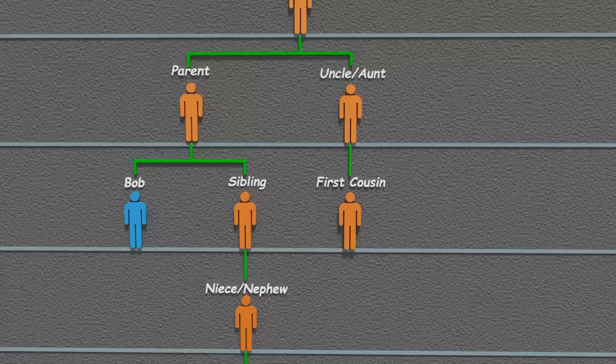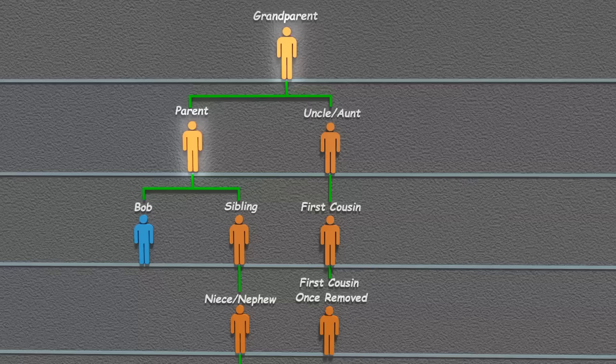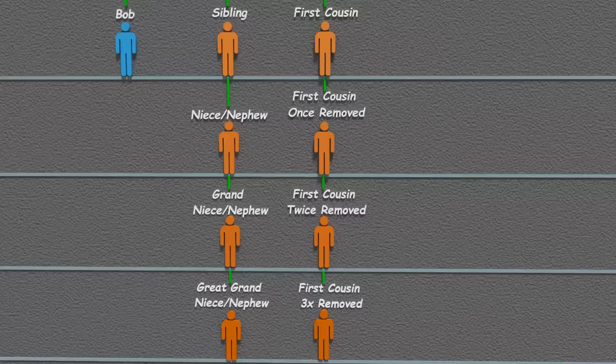Here's where it gets a little interesting. If Bob's cousin decides to have a child, this person will be Bob's first cousin once removed. The once removed part refers to them being one generation apart. To find a common ancestor, Bob has to go up two generations, and his first cousin once removed has to go up three generations. Continuing this pattern downward, this would be Bob's first cousin twice removed, and so on.